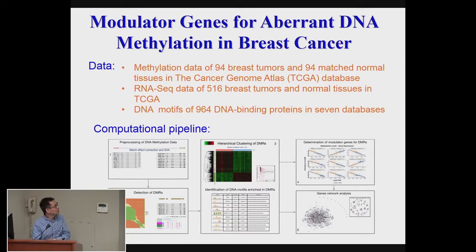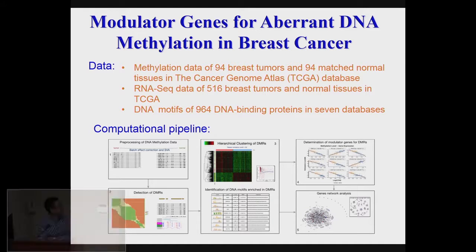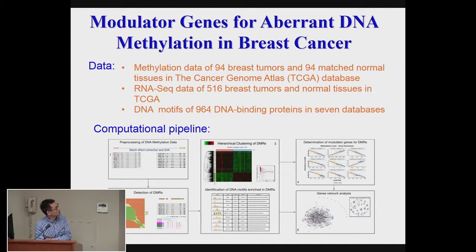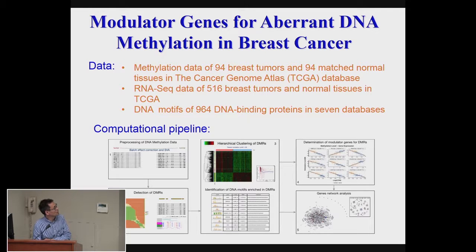We got a dataset of DNA methylation data from what we call the Cancer Genome Atlas database — breast cancer tumors and also some normal tissues. We got RNA-seq gene expression data and DNA motif data. Then we developed a computational pipeline.